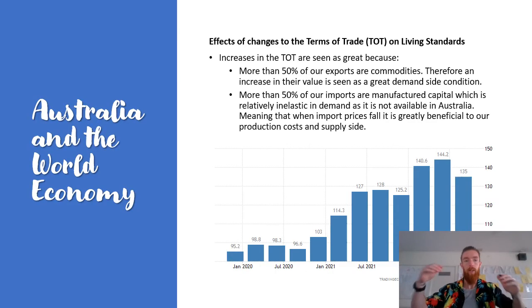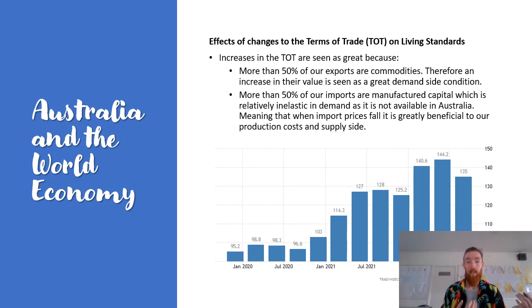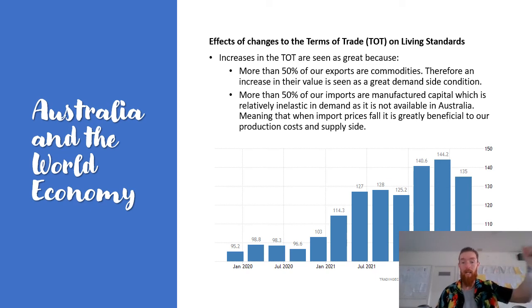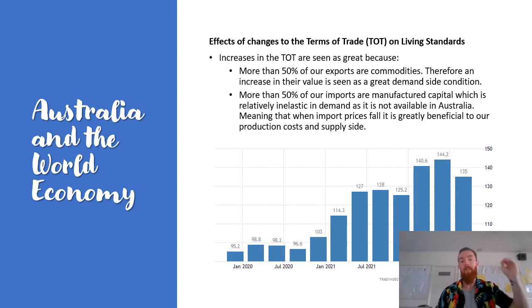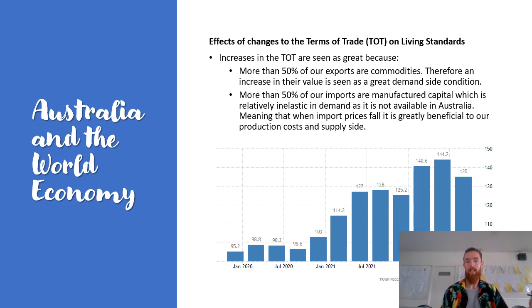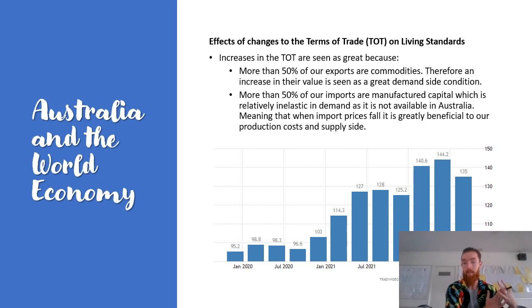Looking at the effects of changes in the terms of trade on living standards: an increase in the terms of trade is seen as great because more than 50% of our exports are commodities, which means an increase in their value is a great demand-side condition — people continue to demand them even when prices rise, which is great for aggregate demand, economic growth, and unemployment, as production continues to rise. More than 50% of our imports are manufactured capital — machinery, technology we need for production — which is relatively inelastic as it's not available in Australia. When import prices fall, it's greatly beneficial to our production costs because we can get more of that manufactured capital cheaper, lowering costs and maximizing production.